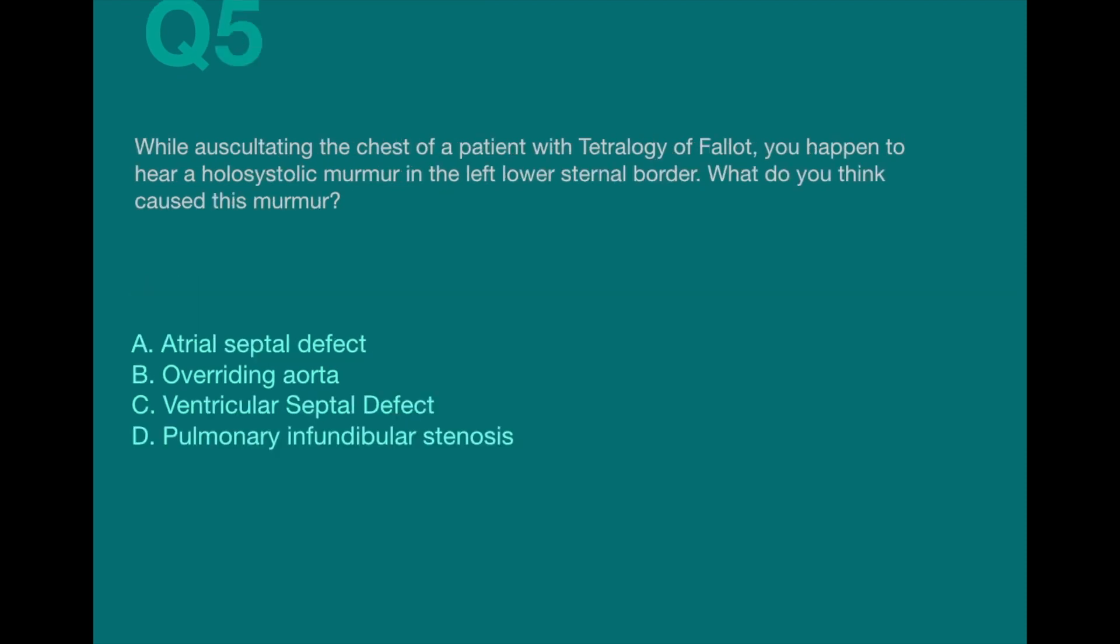Question 5. While auscultating the chest of a patient with tetralogy of Fallot, you happen to hear a holosystolic murmur in the left lower sternal border. What do you think caused this murmur? a. Atrial septal defect b. Overriding aorta c. Ventricular septal defect d. Pulmonary and fundibular stenosis